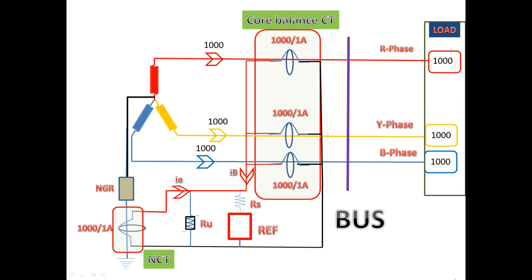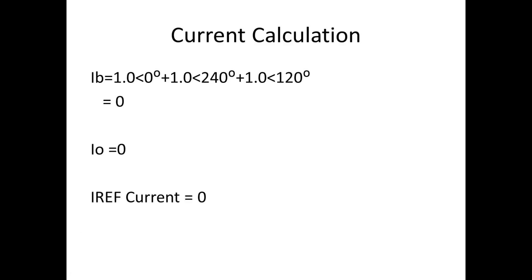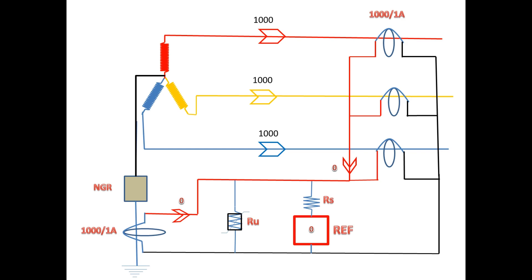Now we consider the load is connected and the load current is 1000 amps in all phases. To find IB, we sum all three phase currents. When we add all three phases, we get zero. Also, there is no current in the neutral CT, so I0 is zero. In this condition, the REF relay will read zero amps and the system will be stable.